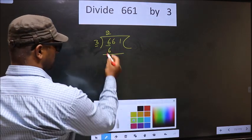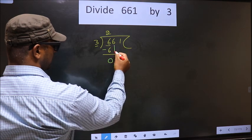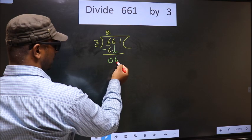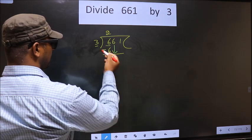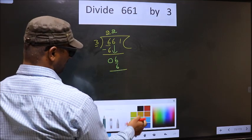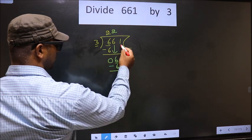Now you subtract 6 minus 6 equals 0. Now you bring down the next number 6. Here we have 6. When do we get 6 in the 3 table? 3 times 2 is 6. Now you subtract 6 minus 6 equals 0.